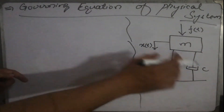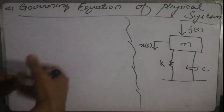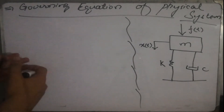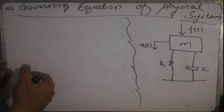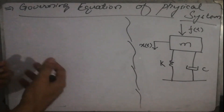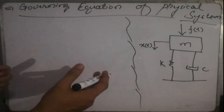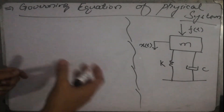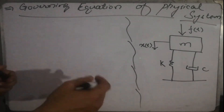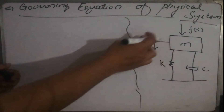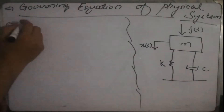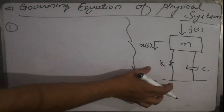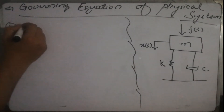We will also be using the Laplace transformation techniques discussed in the previous lectures, lecture 4 and lecture 5, to solve our equation and get the final result which will be the output in the time domain. Our first step would be to draw the free body diagram of this physical system.